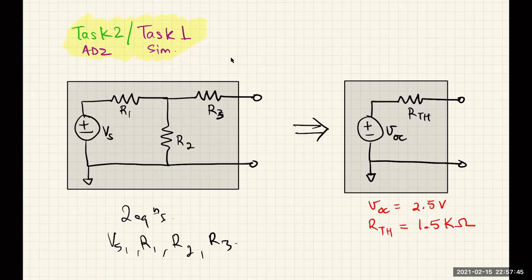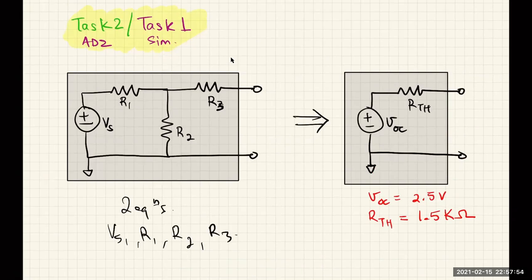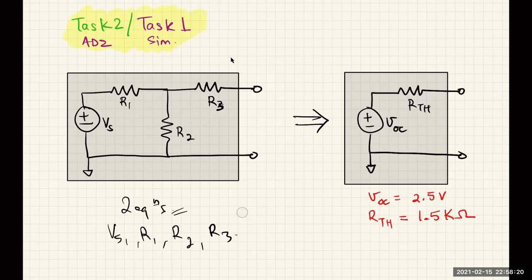Since there are two equations and four unknowns, you just need to find one solution. The way to do it is to make an engineering design choice: pick any two values out of the four. For example, choose Vs = 4V and R1 = 0.5kΩ, and then the two equations will determine what R2 and R3 need to be.